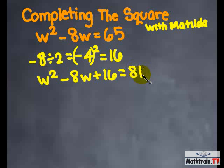Then you factor the left side. When you factor, you end up with w minus 4 squared equals 81.